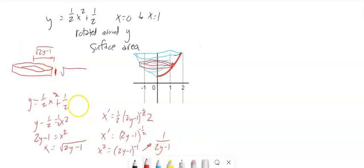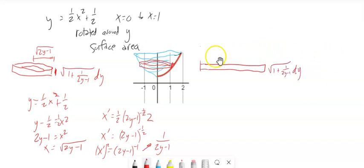So that means that this is the square root of 1 plus 1 over 2y minus 1, the square root of 1 plus the derivative squared, times dy. Now if I cut this, stretch it open, this is still this. And then this distance right here is the circumference of that circle. 2π times the radius.